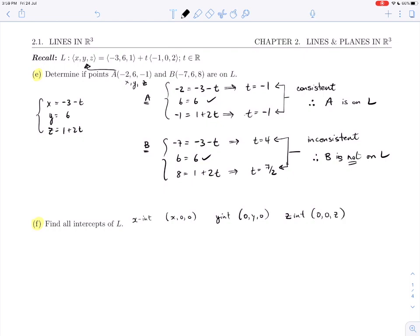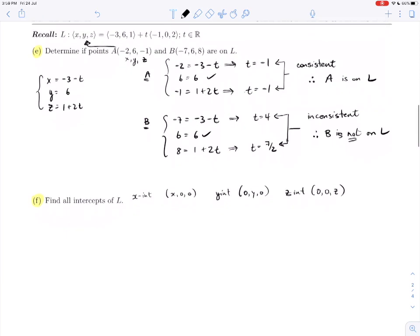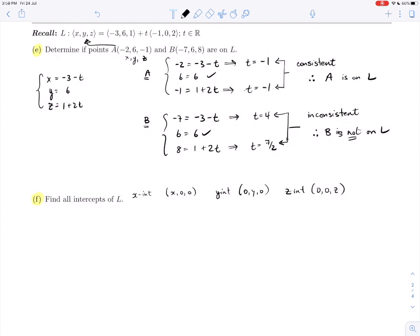What we have to do to find each of these intercepts is plug in and see if we can solve just like we did in Part E. For the x-intercept, we let y and z be 0. If we plug those into the parametric equation form, we get 0 = -3 - t, 0 = 6... well, that doesn't work. I don't even have to do anything more. This is inconsistent—0 certainly is not equal to 6, which means there is no x-intercept.